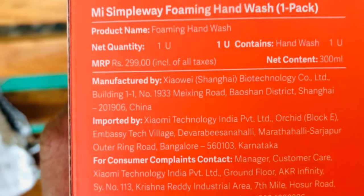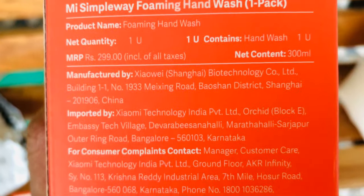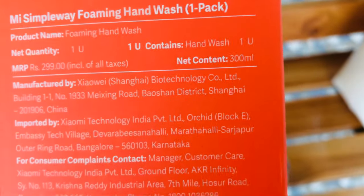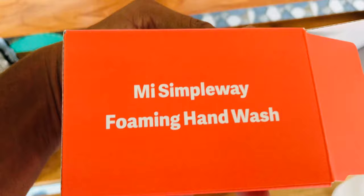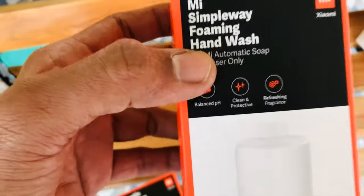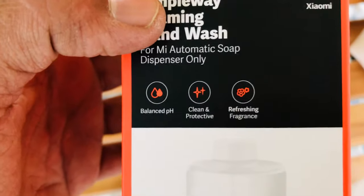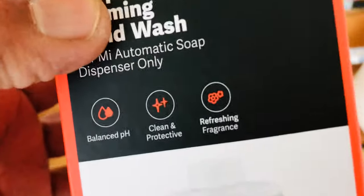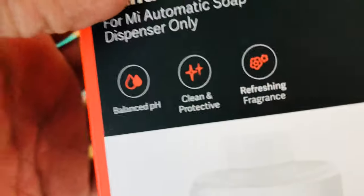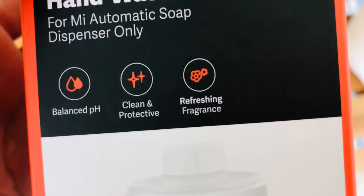The MRP is 300 rupees. We have to purchase this separately - it's 300 ml, so basically one rupee per ml. Outside the box, they've given the name 'MSM Simple Way Foaming Hand Wash.' The features include balanced pH, cleaning and protective type for cleaning our hands with protection, and refreshing fragrance.